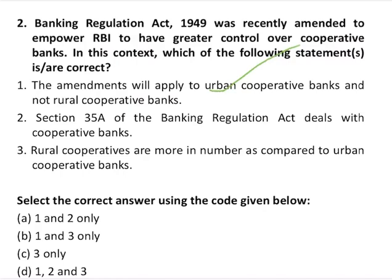The second statement says Section 35 of the Banking Regulation Act deals with cooperative banks — this is wrong, because it is not Section 35A but Section 56 which deals with cooperative banks under the Banking Regulation Act. The third statement says rural cooperatives are more in number compared to urban cooperatives — this is also correct. So statements one and three are correct, making option B the correct answer.